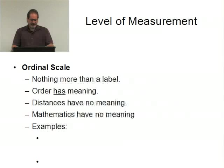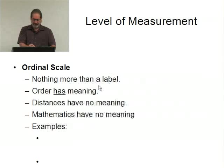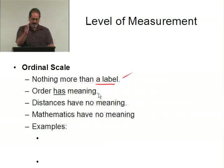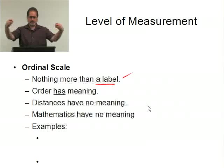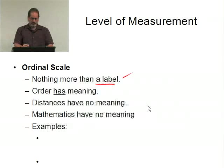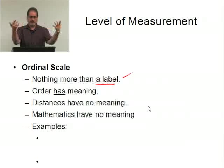The next measurement scale is the ordinal scale. Something on the ordinal scale is once again nothing more than a label — however, this time the order actually has meaning. There is a natural order. But distances have no meaning. If I subtract two values, that's a distance, but if I try to subtract two values from something that's ordinal, there's no meaning for it. If you can't subtract two things and get a meaningful distance, then mathematics has no meaning.